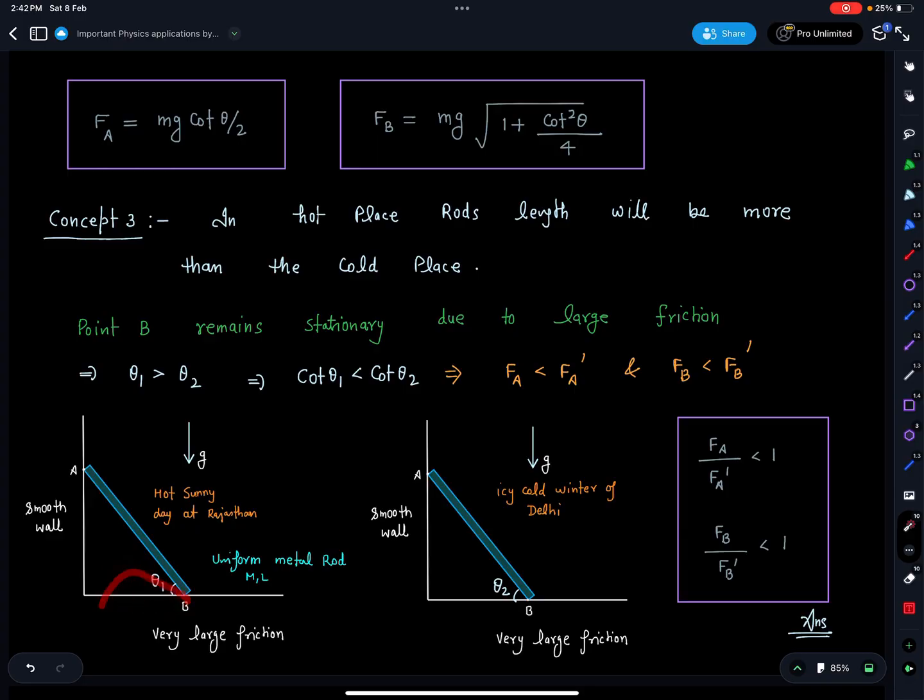So theta 1 is greater than theta 2. And here FA and FB have dependency of theta. So I can see theta 1 is greater than theta 2, this means cot theta 1 is going to be less than cot theta 2. It means FA where angle is more, that force will be smaller. So FA is less than FA dash and at the same time FB is less than FB dash. So both the ratios are going to be less than 1.